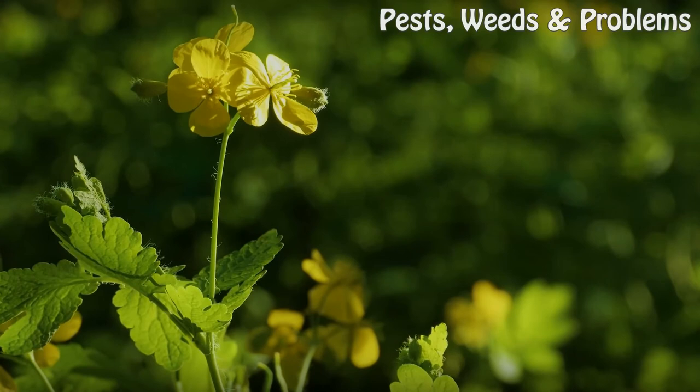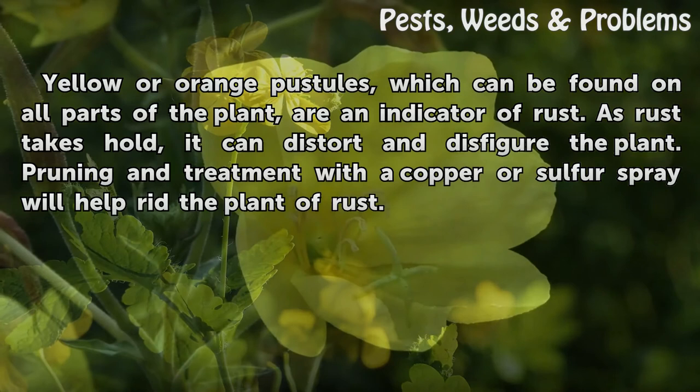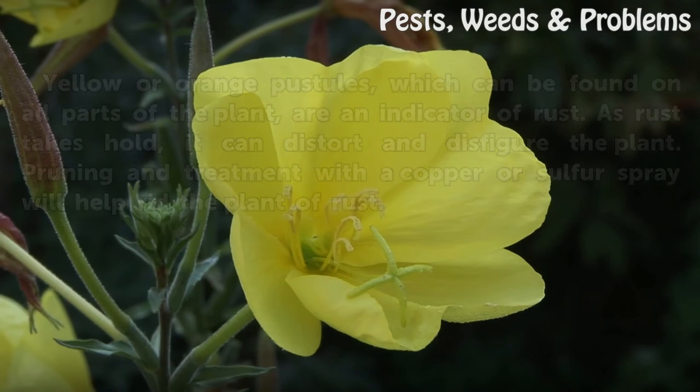Rust. Yellow or orange pustules, which can be found on all parts of the plant, are an indicator of rust. As rust takes hold, it can distort and disfigure the plant. Pruning and treatment with a copper or sulfur spray will help rid the plant of rust.